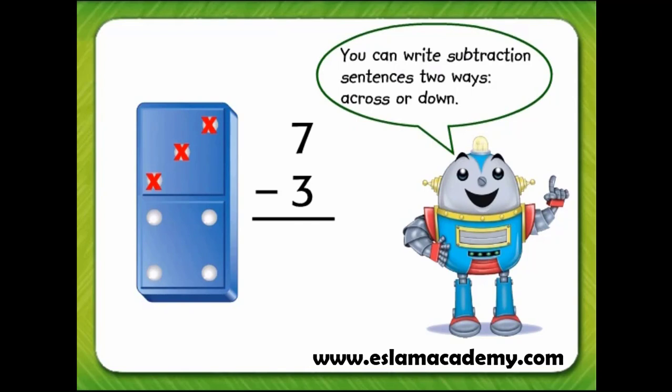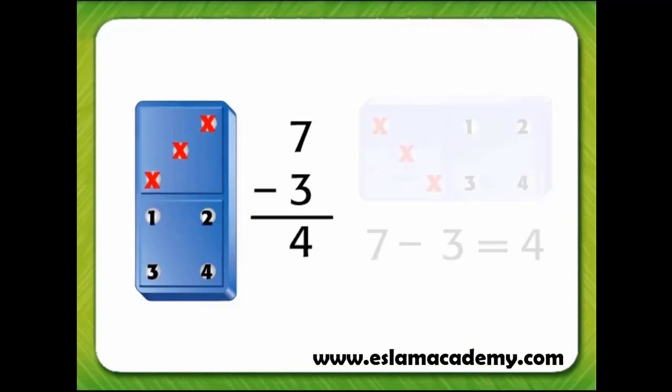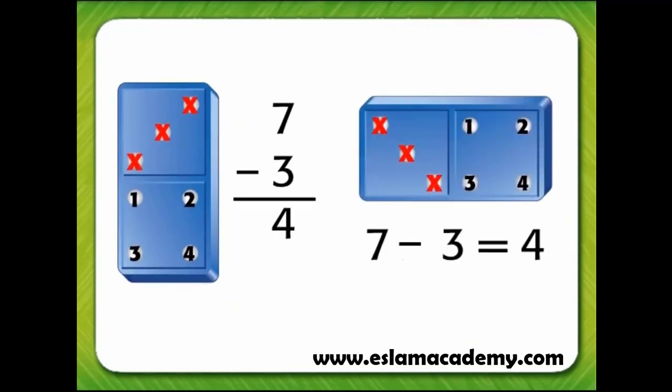Now draw a line under the minus sign and the three. This line represents the equal sign. There are four dots left, so write the answer four under the line and below the three. Notice that both subtraction sentences are the same, even though one is written across and one is written down.